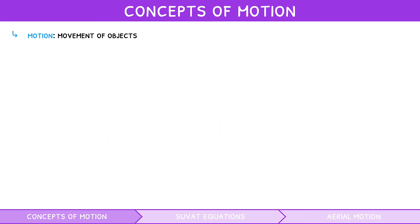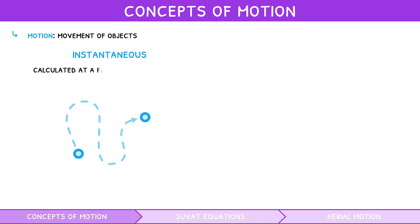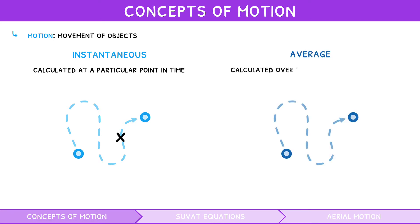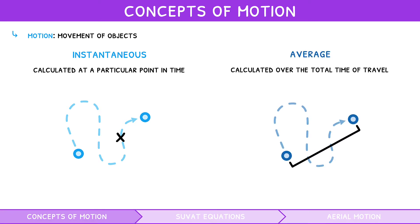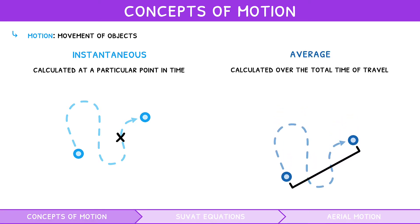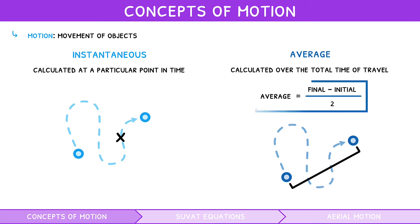For each of these units, they can come in two forms: instantaneous, calculated at a particular point in time, and average, averaged over the total time of travel. The formula for average is: average equals final minus initial divided by 2.